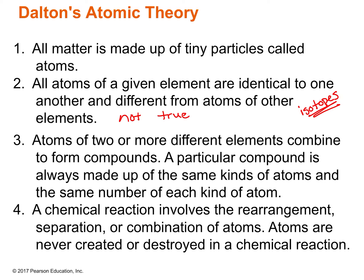The third postulate says that atoms of two or more different elements combine to form compounds, and a particular compound is always made up of the same kinds of atoms and the same number of each kind of atom. Let's think about water: water is always made up of two atoms of hydrogen and one atom of oxygen. You can't change the number of hydrogens and oxygens, or it's not water anymore.